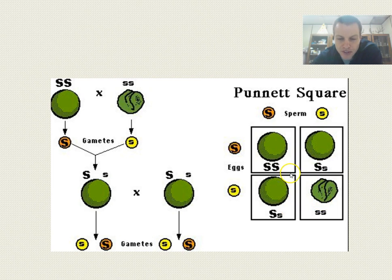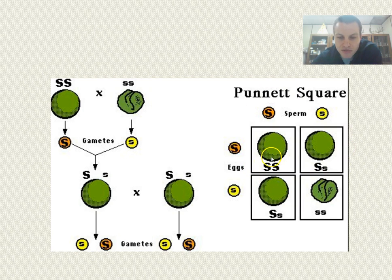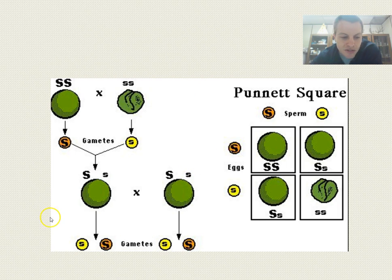If you have any questions over this, please come and ask me. I know it can be kind of confusing at first. We will get more into this in section two and it'll hopefully click for you. We're going to be using Punnett squares to find the different gametes that something could produce. That's the end of lecture 12.1. Good luck on your mastery quiz, and please ask me questions if you have any.